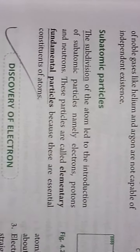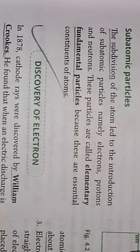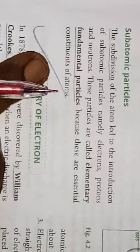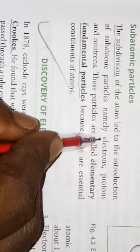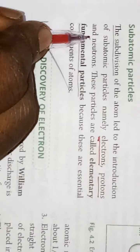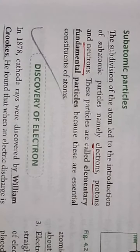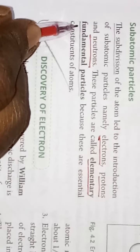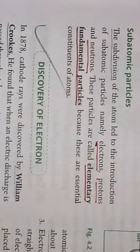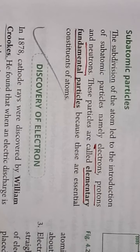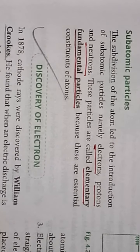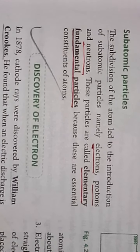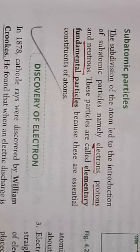Now we will discuss what are the subatomic particles and how the atom is subdivided. The subdivision of the atom led to the introduction of subatomic particles like electrons, protons, and neutrons. These particles are called elementary fundamental particles because they are the essential constituents of atoms. Now we will discuss these three fundamental subatomic particles: electrons, protons, and neutrons.